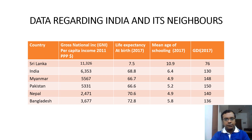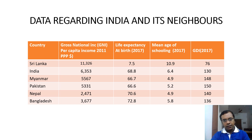For other neighbors: Pakistan's GNI figure is 5,331; Myanmar is 5,567; Nepal is 2,471; and Bangladesh is 3,677. Looking at life expectancy as per 2017 statistics, Sri Lanka tops the chart at 71.5 years compared to India at 68.8 years, while other countries are much below India.